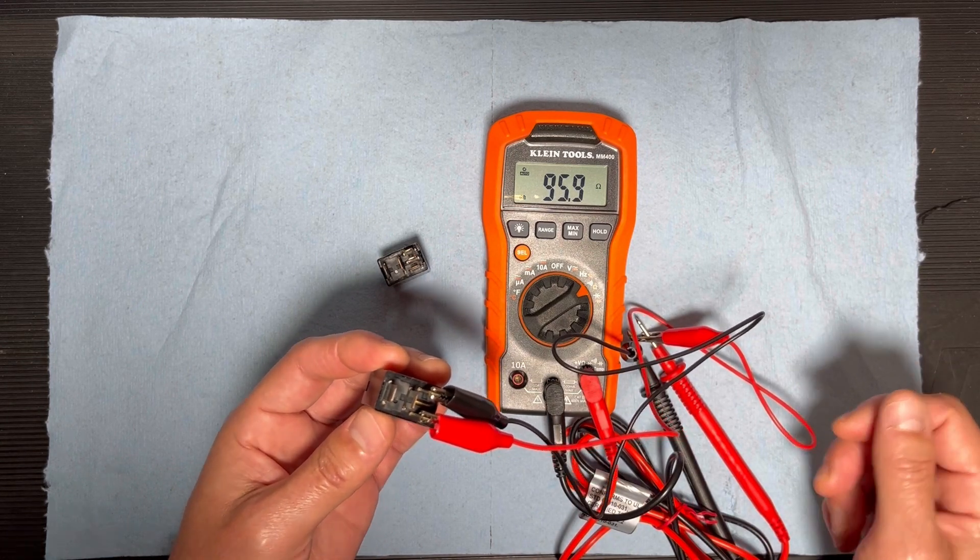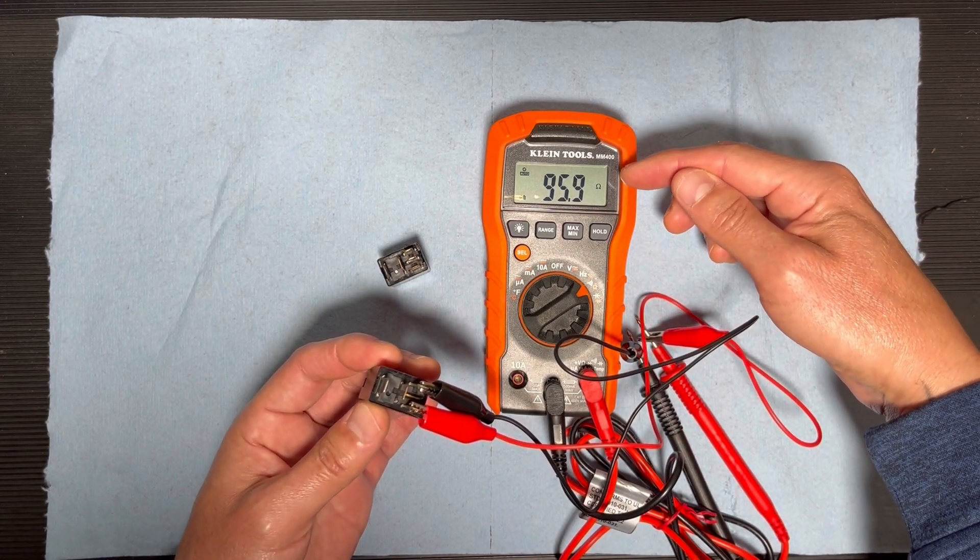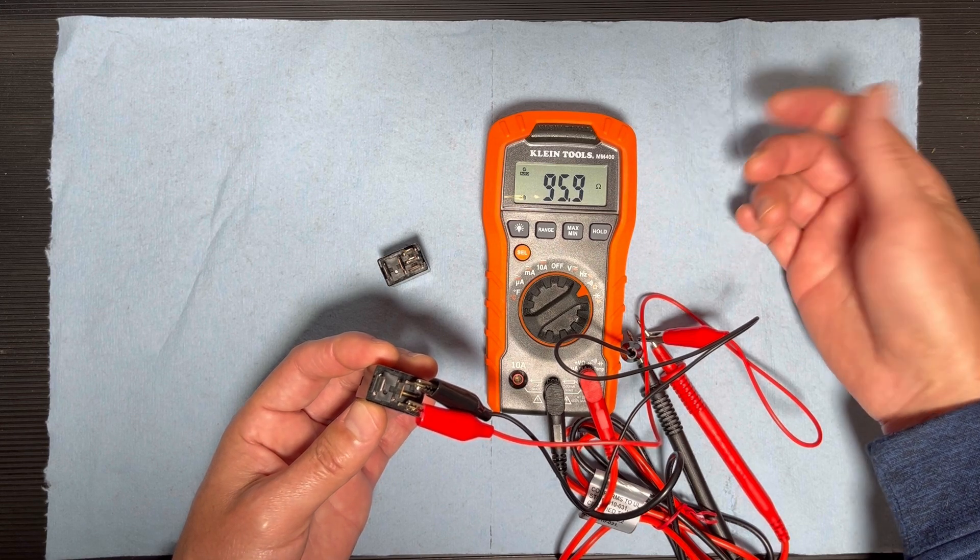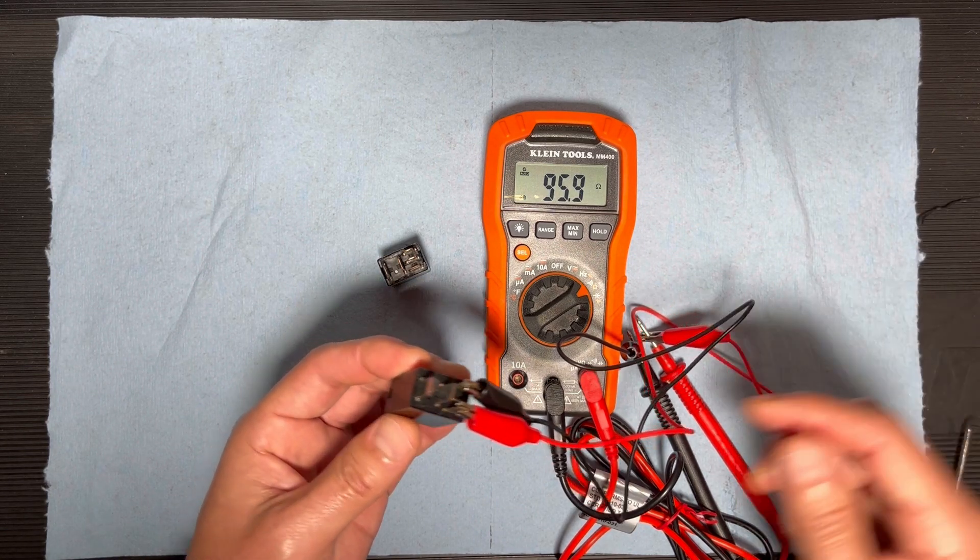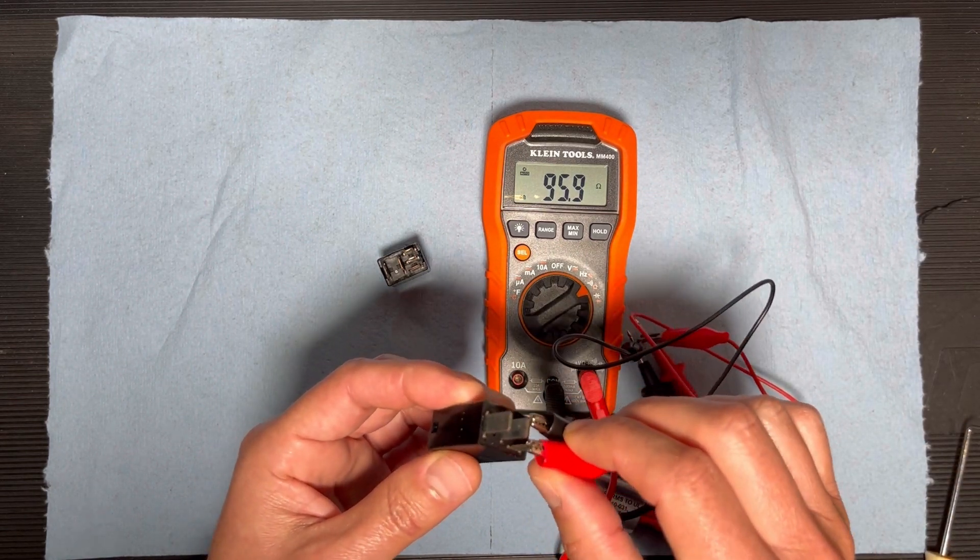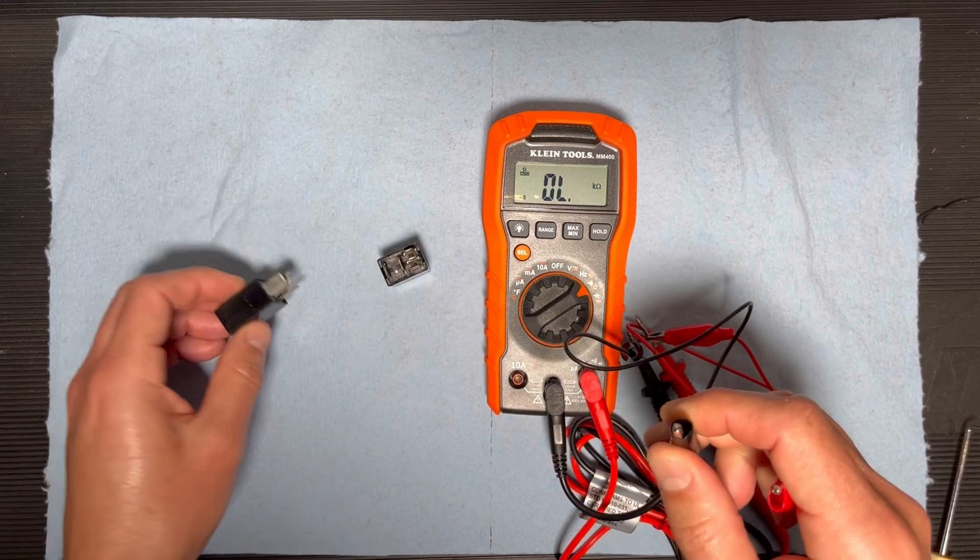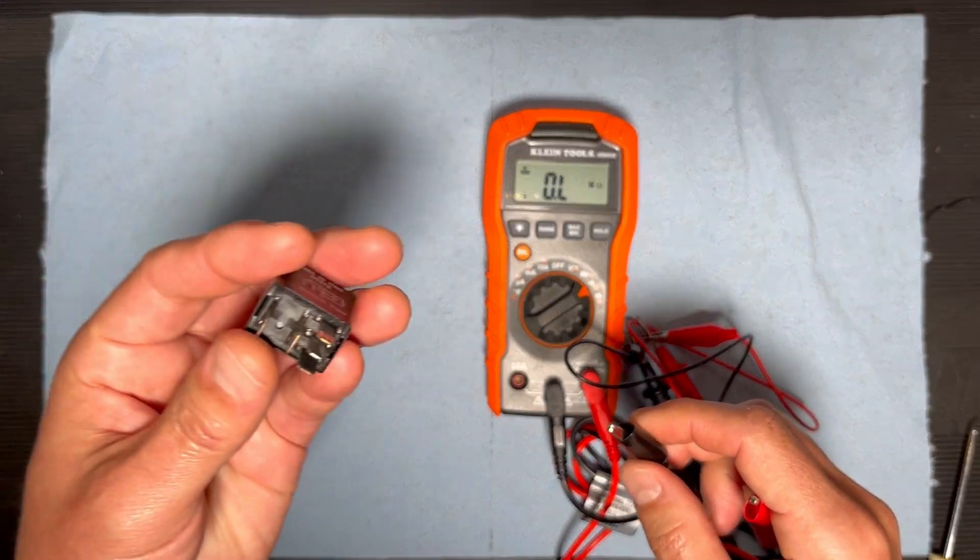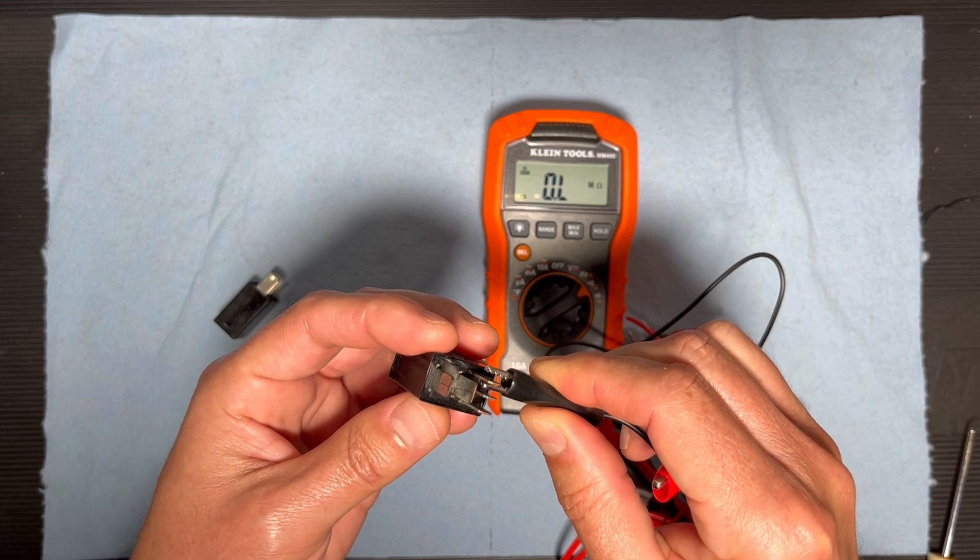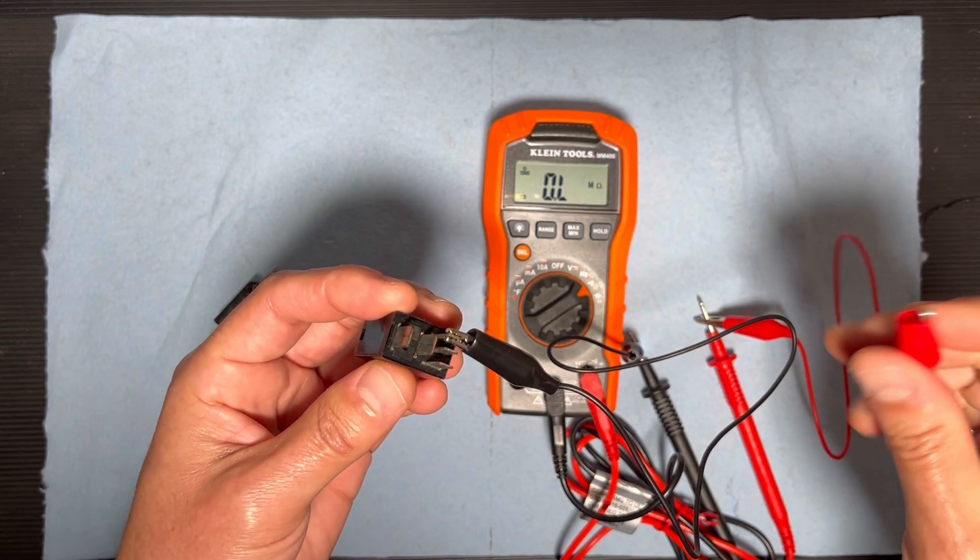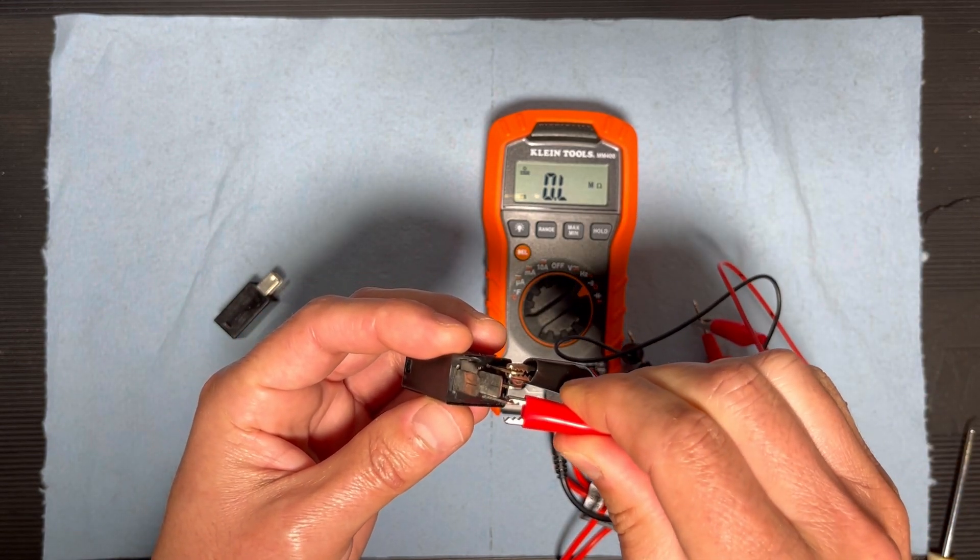In this case it shows 95.9, so that means this relay is good. Now let me show you the five pin relay. I'm going to connect here on the 85 and this one on the 86.